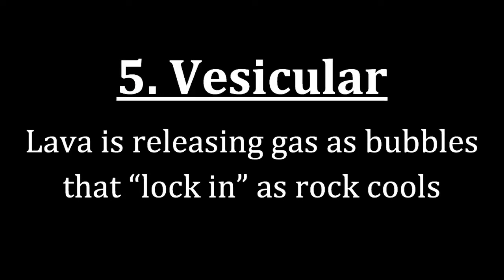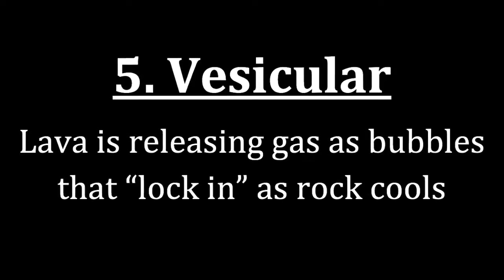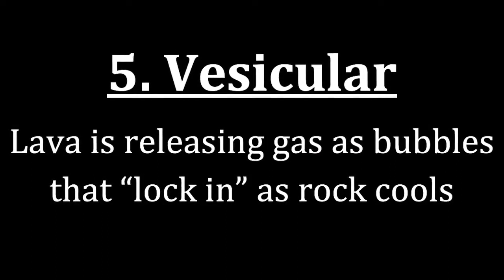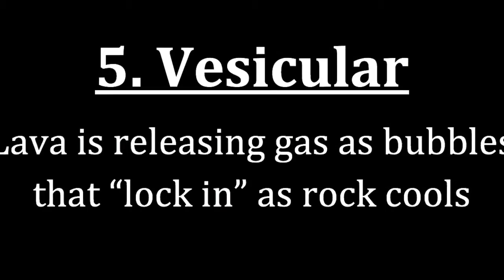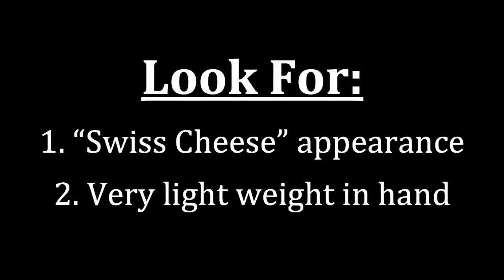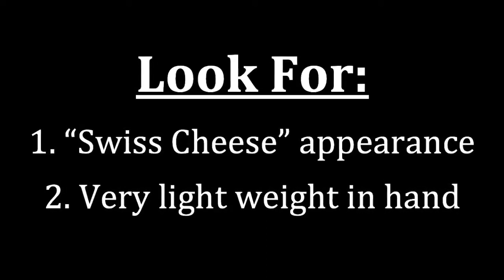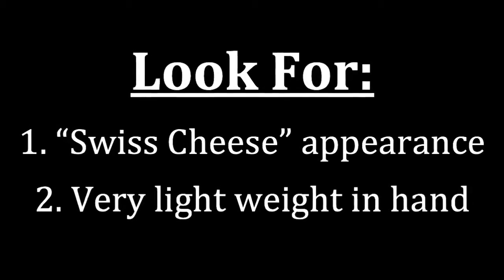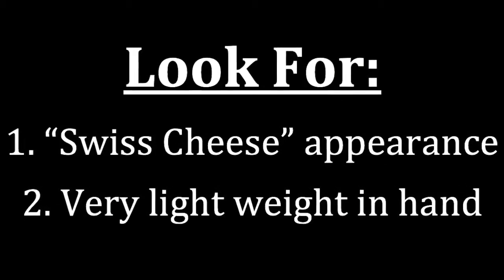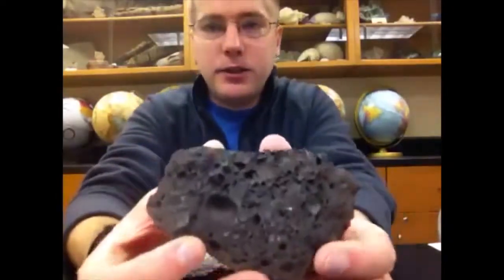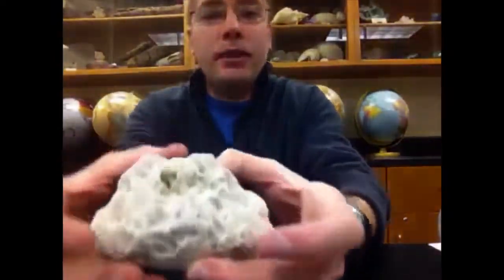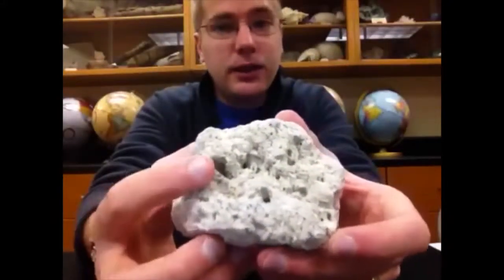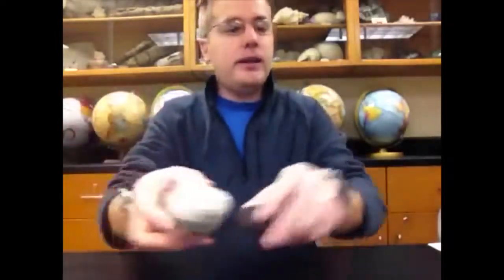The next texture is called vesicular. In a vesicular rock, we're seeing the result of lava that had gas being released as bubbles, which then locked in the remnant of the bubble as the rock cooled. In vesicular rocks, we look for what we call the Swiss cheese appearance — a bunch of holes — and when we hold it, it's very lightweight because all that gas left open pockets of space. You can see right away these were gas bubbles, giving that Swiss cheese appearance, and the rock is also very light for its size.